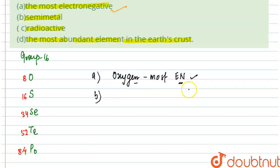The next thing that we need to find out here is semi-metal. Semi-metal in this group is tellurium. Tellurium is a metalloid.